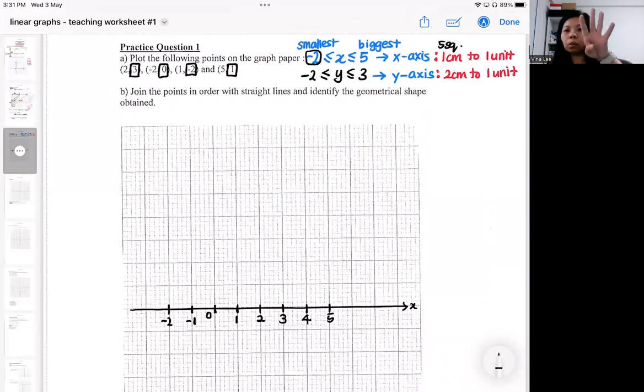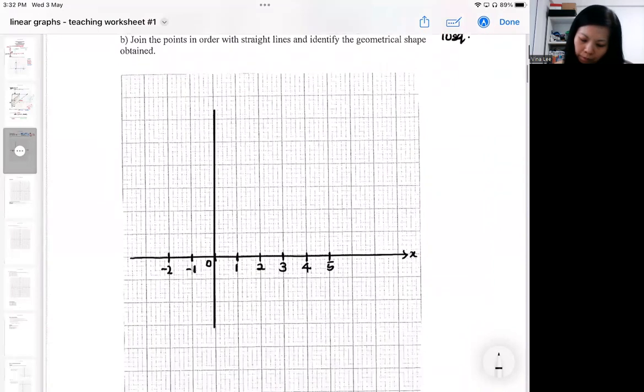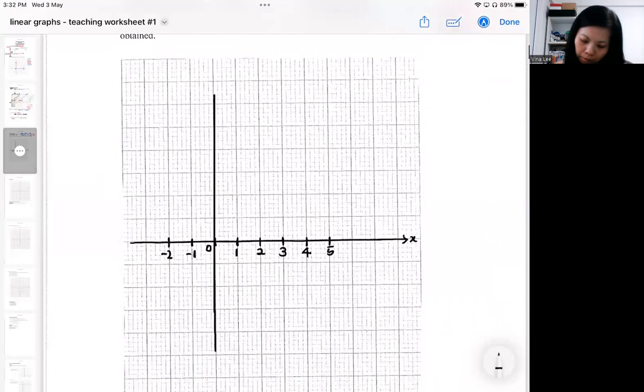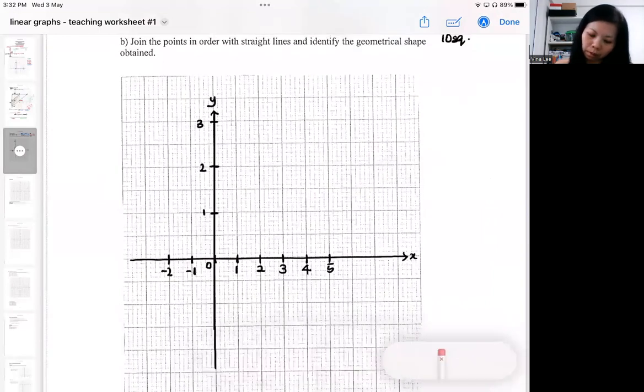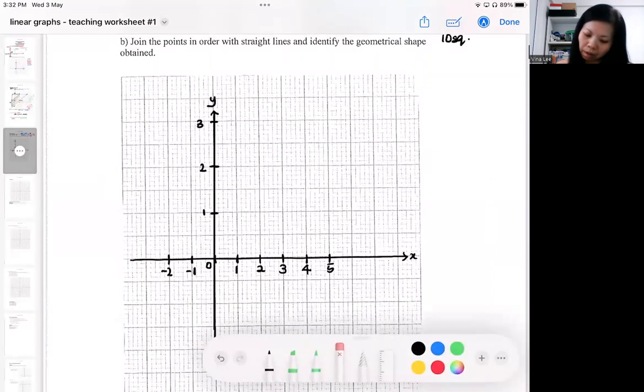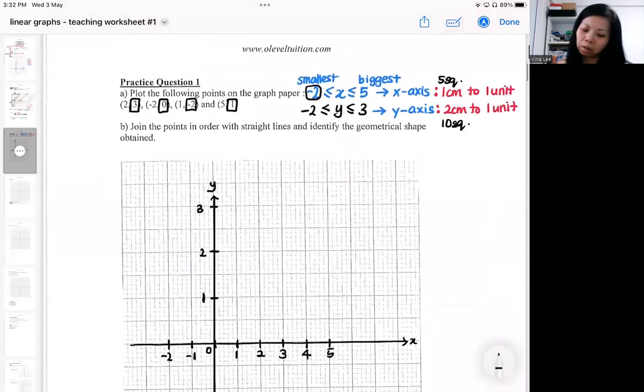So for the y-axis is two centimeters, one unit. Two centimeters means ten squares. And I need it from minus two to three. So that's my y-axis. We've got to count out ten squares. So ten square is one unit. Every ten square is one unit. And I will need it from minus two to three.